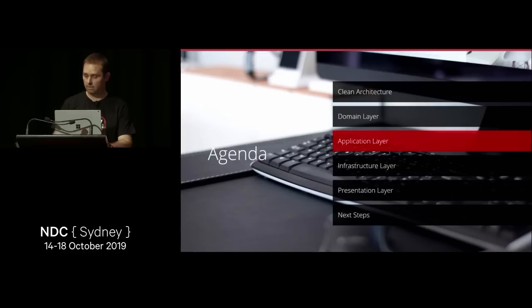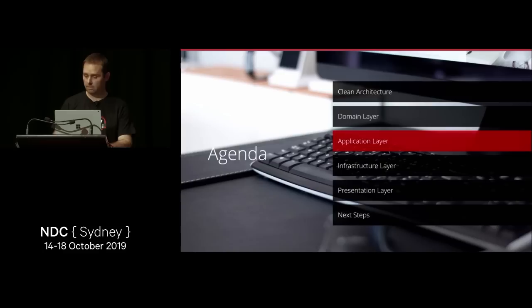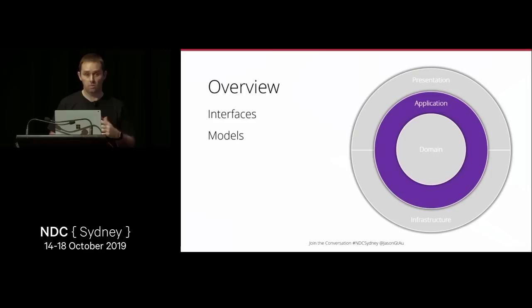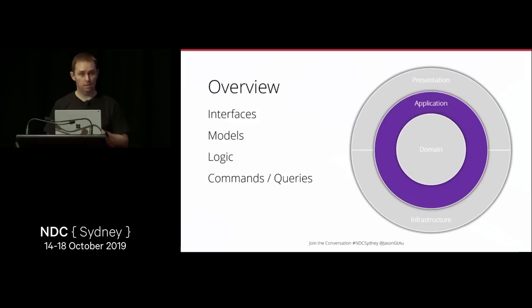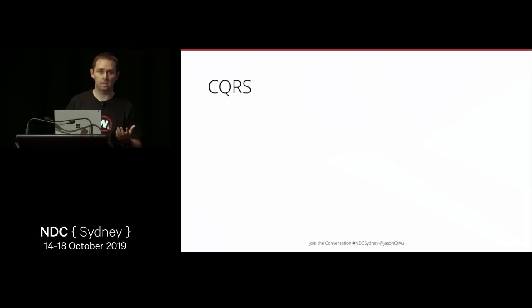In the application layer we have interfaces — abstractions implemented by outer layers — as well as models, view models, DTOs, logic, commands and queries, validators, and exceptions.